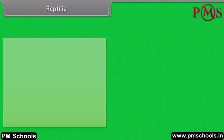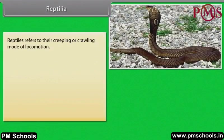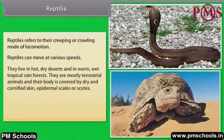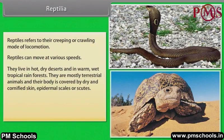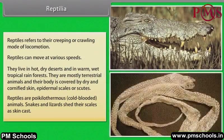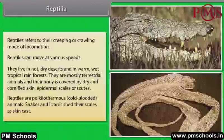Reptilia. Reptiles refer to their creeping or crawling mode of locomotion. Reptiles can move at various speeds. They live in hot, dry deserts and in warm, wet tropical rainforests. They are mostly terrestrial animals and their body is covered by dry and cornified skin. Epidermal scales are scutes. Reptiles are poikilothermous or cold-blooded animals. Snakes and lizards shed their scales as skin cast.